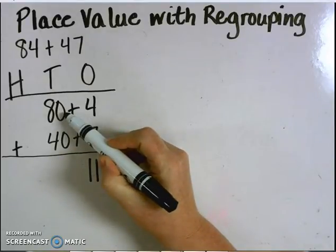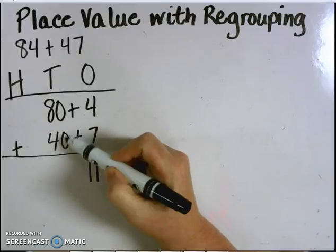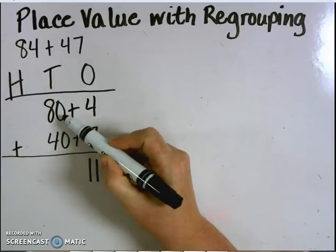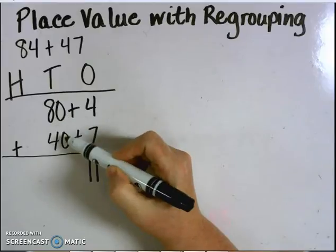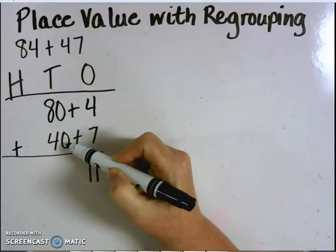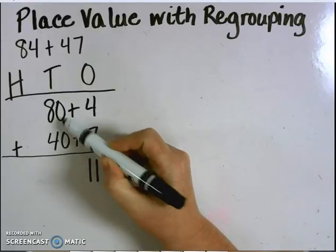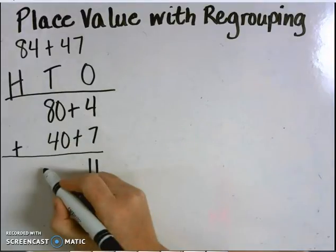I notice the same thing in the tens place. I know that I'm going to get a number greater than 100 once I add them because I know 80 plus 20 equals 100. 80 plus 40, then, equals 120.